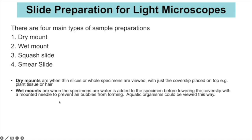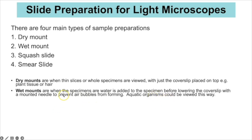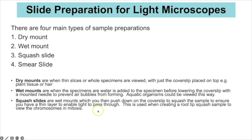Wet mounts are more common — you may have done this in lower school when looking at cheek cells or onion cells. The specimens are added to water or a stain before the cover slip is lowered on top with a mounted needle to prevent air bubbles forming. If you were going to examine living aquatic organisms you would have to do that as a wet mount.